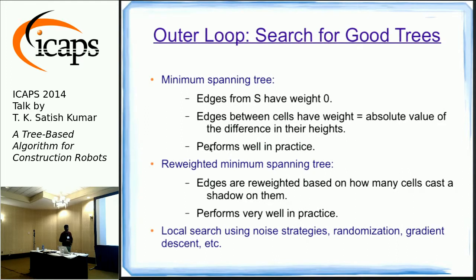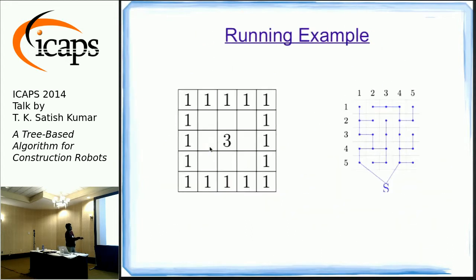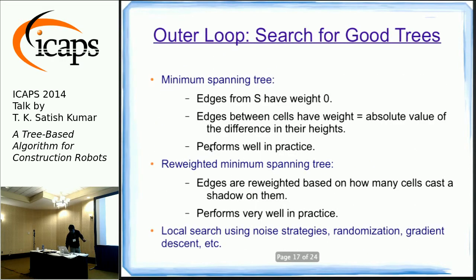In the outer loop, we search for a good spanning tree to supply to the inner loop. One option is the minimum spanning tree, where edge weights equal the height difference between endpoint locations—this captures inroads into the structure's architecture with minimum height variation. A re-weighted minimum spanning tree (RMST) is also described in the paper and performs slightly better in practice. The key point is that an entire space of trees can be explored in the outer loop.